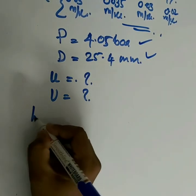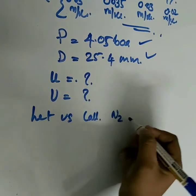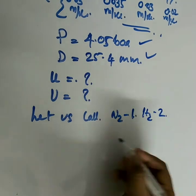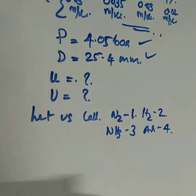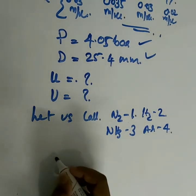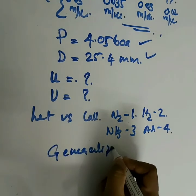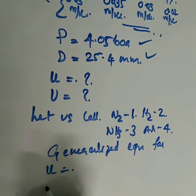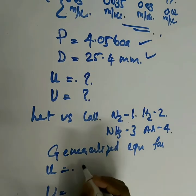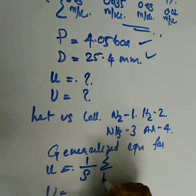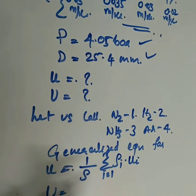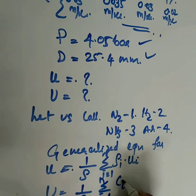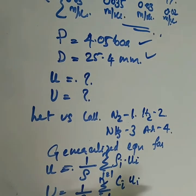Let us call nitrogen as the first component, hydrogen as the second component, ammonia as the third component, and argon as the fourth component. Now write down the generalized equations for mass average velocity and molar average velocity. For mass average velocity: u = (1/ρ) × Σ ρᵢuᵢ. For molar average velocity: U = (1/c) × Σ cᵢuᵢ, where cᵢ is the concentration of the ith species and uᵢ is its absolute velocity.